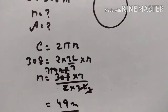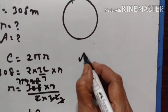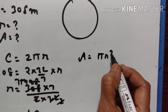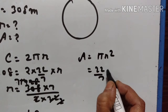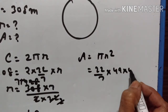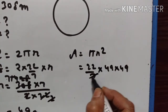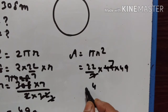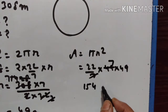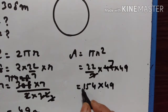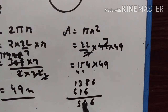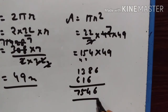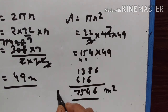So what is the area? Area is equal to πr². (22/7) × 49 × 49. (22/7) × 49 = 154, and 154 × 49 = 7,546 square meters. That is the area of this field.